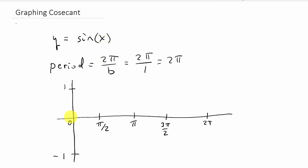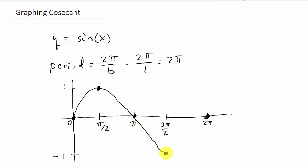This video is assuming you know how to graph a sine function. What we know about sine once we break it up into these intervals: the sine function starts out at 0, then goes to its maximum, then back to 0, then to its minimum, and then back to 0. That would be our sine function. The main thing is getting these five key points - it always goes 0, max, 0, min, 0.